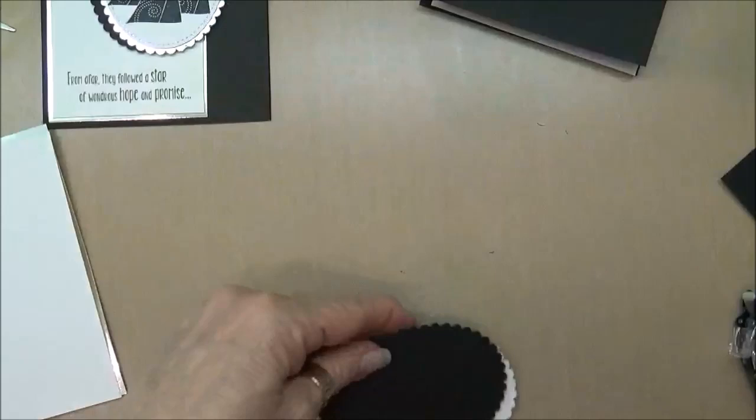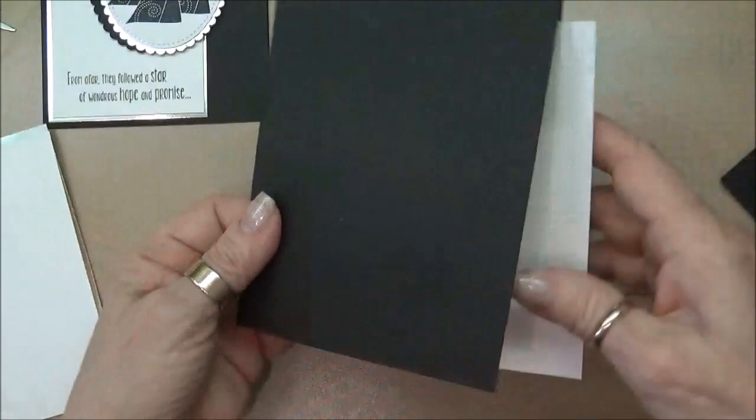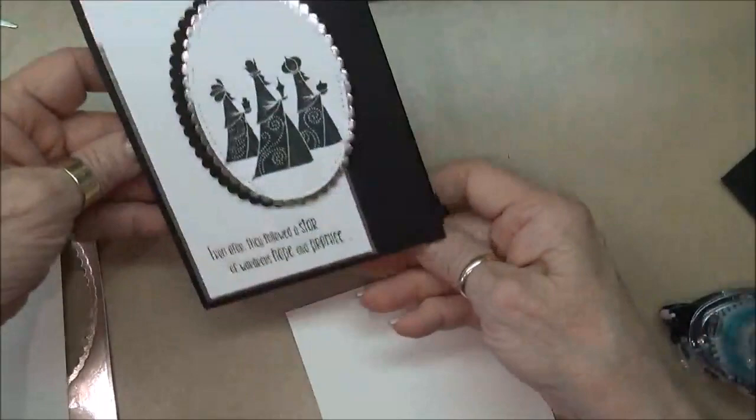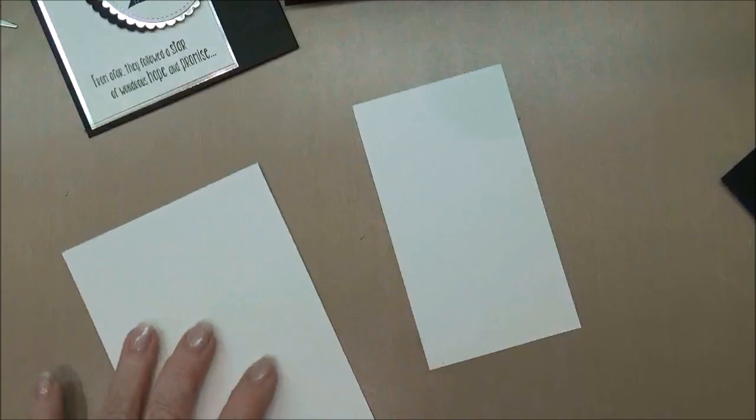So now we have this all done and then I'm just going to apply snail to the back and so this is ready for us to put together. Now what I'm going to do is I'm going to go ahead and stamp the inside of the card and I'm going to stamp the sentiment on this card.